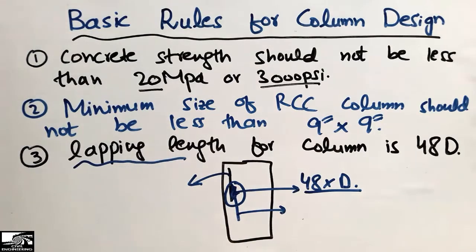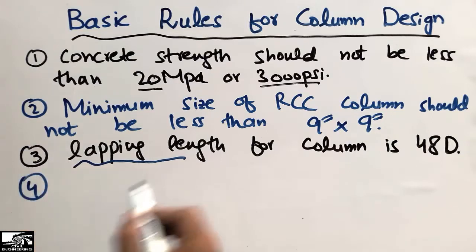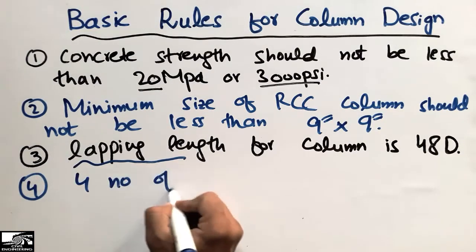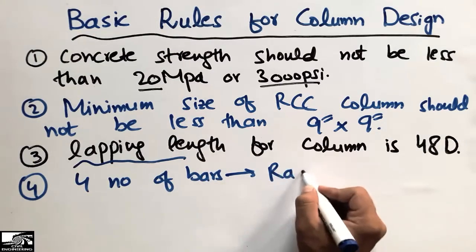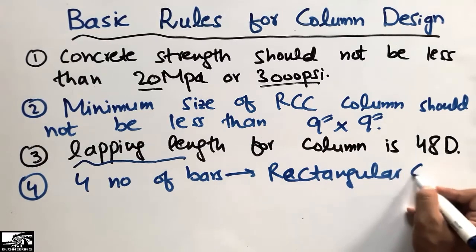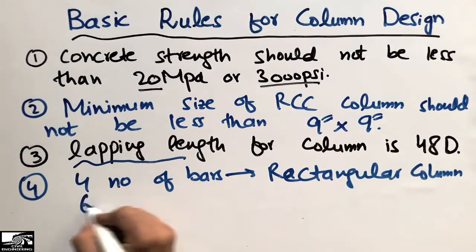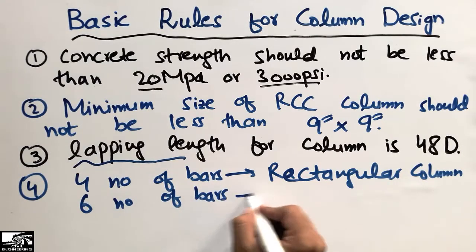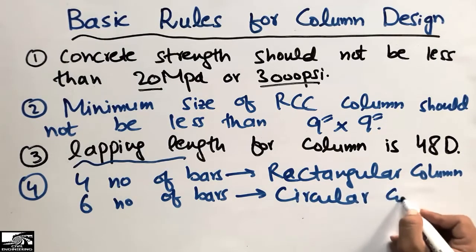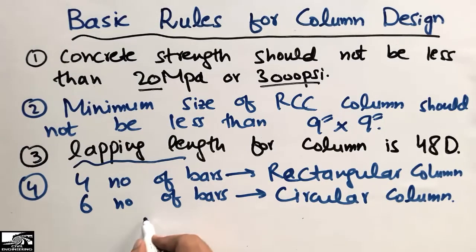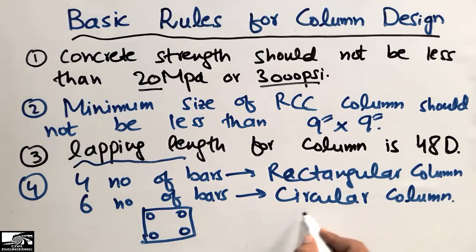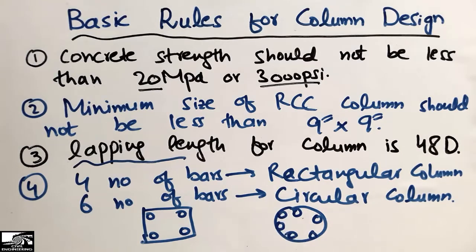The fourth point is that we must provide a minimum of 4 bars in case of a rectangular column. These are the longitudinal bars. In case of a circular column, we must provide a minimum of 6 bars. For a rectangular column, we provide 4 bars at the corners; for a circular column, we provide 6 bars — one, two, three, four, five, and six. These are the minimum requirements for any column design.